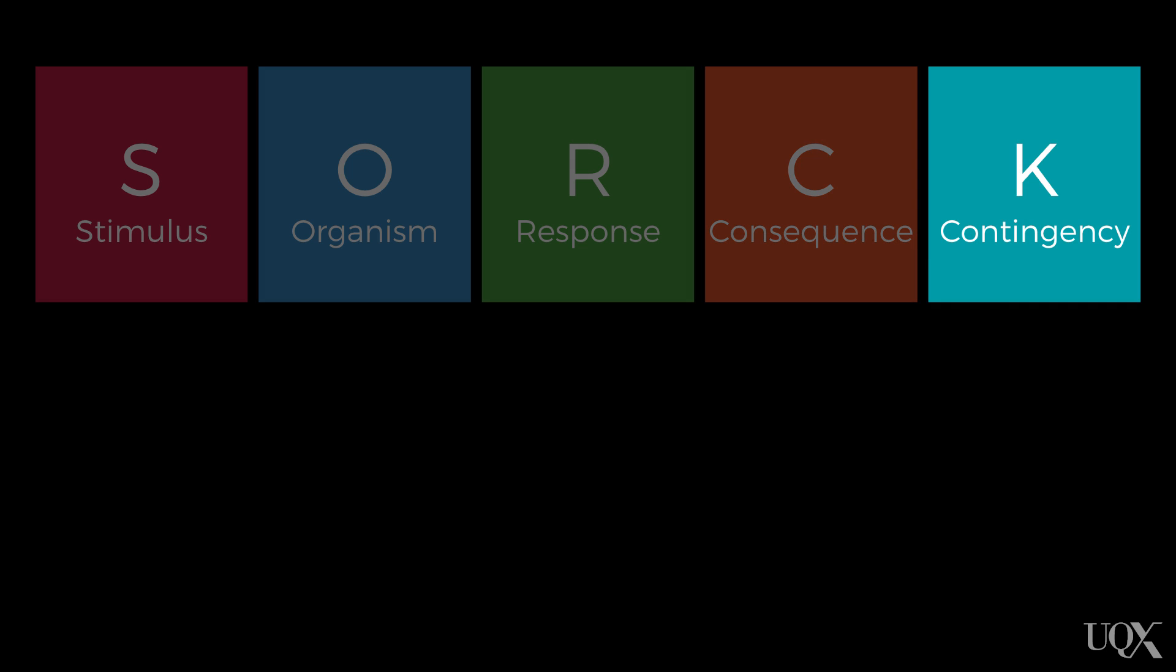The contingency column, our final stop. This is basically where we do our thinking in terms of the principles of operant conditioning, about how the behavior or response and its consequences are related to each other. It's where we try to understand what function the behaviors are serving.